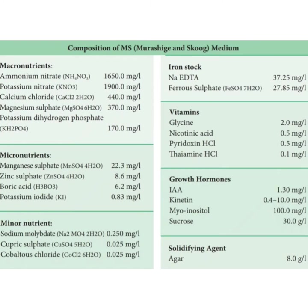Vitamins in MS medium: glycine 2 mg/L, nicotinic acid 0.5 mg/L, pyridoxine hydrochloride 0.5 mg/L, thiamine hydrochloride 0.1 mg/L. Growth hormones: IAA 1.30 mg/L, kinetin 0.4–10 mg/L. Additionally, myoinositol 100 mg/L, sucrose 30 g/L, and the solidifying agent agar at approximately 8 g/L.